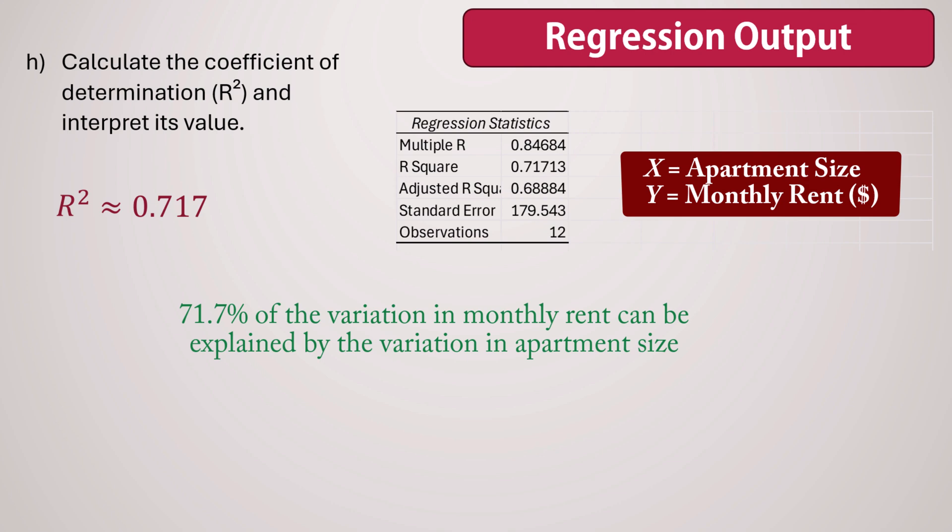Note, however, that there is still about 28.3% of the variation in rent that is not explained by apartment size alone. This remaining variation could be due to other factors such as location, amenities, or property condition.